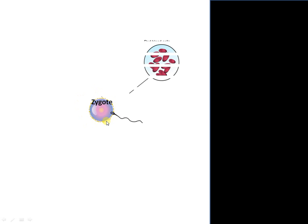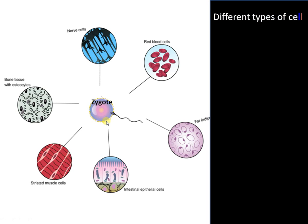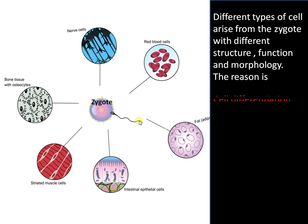We are made up of trillions of cells and all these arise from a single zygote. Different types of cells like nerve cells, red blood cells, bone cells, muscle cells, etc. all arise from a single zygote by division, and all these cells differ in structure, function, and morphology. This process is called cell differentiation.